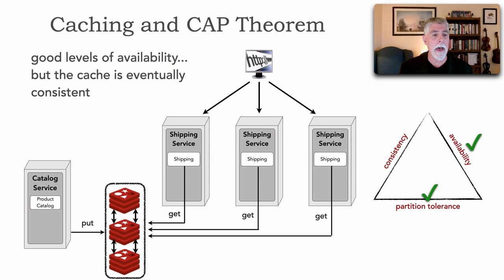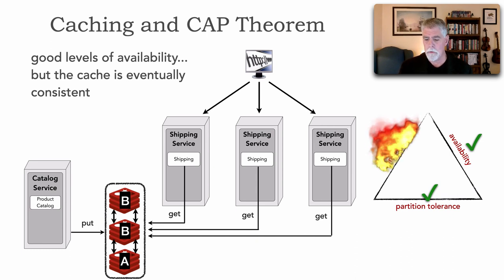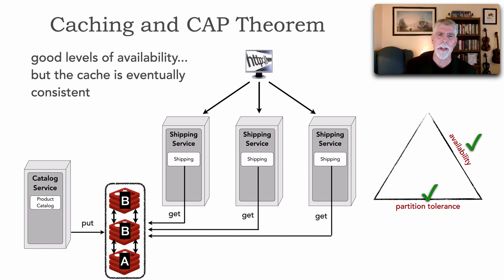But the problem is the cache is no longer consistent — it's eventually consistent. Let's say everything is in line and we make an update to one of the catalog items; I put that in the middle instance. At this point in time, our data is inconsistent, and as it starts replicating or mirroring, I'm still in an inconsistent state. Looking at the triangle, I no longer have consistency. Isn't it frustrating how you solve one problem and keep introducing others?